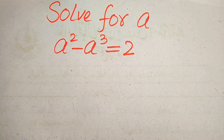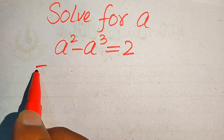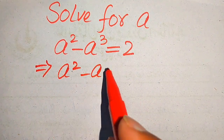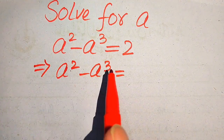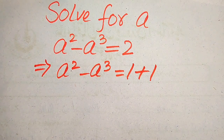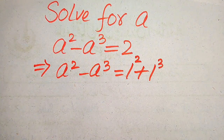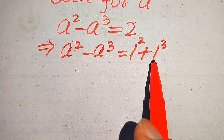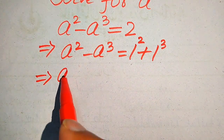The very first thing we do is focus on the right-hand side and break two into a specific form. Since the left-hand side has exponents two and three, we write two as one plus one, and also write one as one squared and one cubed, because the square of one is one and the cube of one is also one.